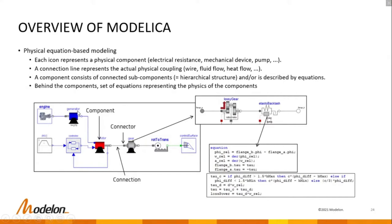For example, inside a gear component you may have a large gear component and an elasto-backlash component. Going through the textual description of the elasto-backlash reveals the actual physics modeled in the Modelica language — for instance, spring and damper equations.